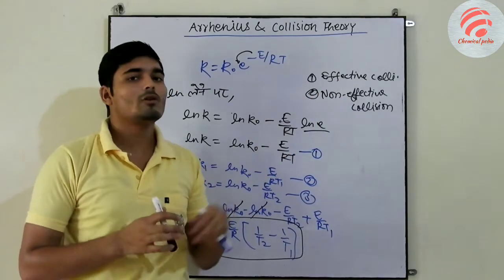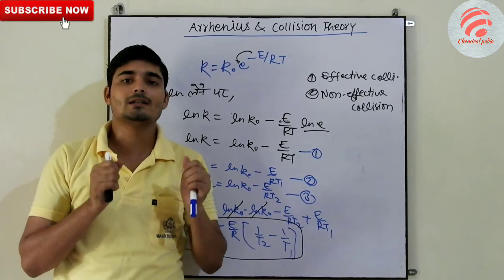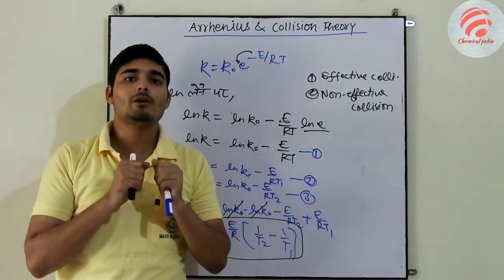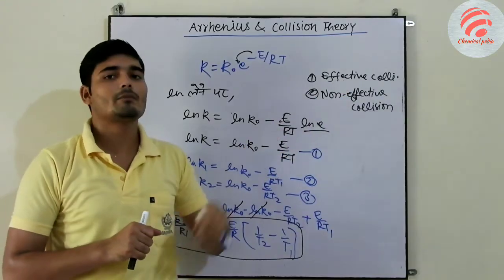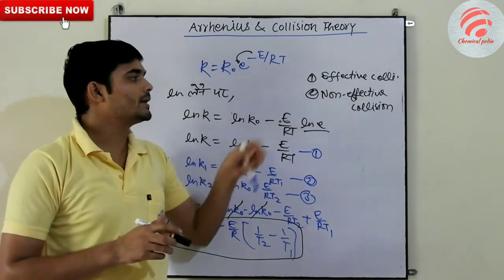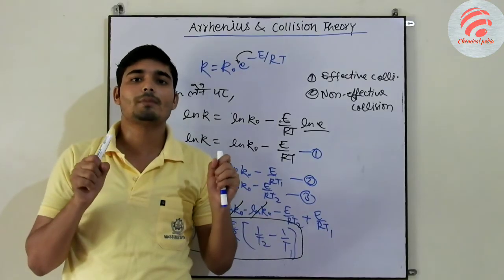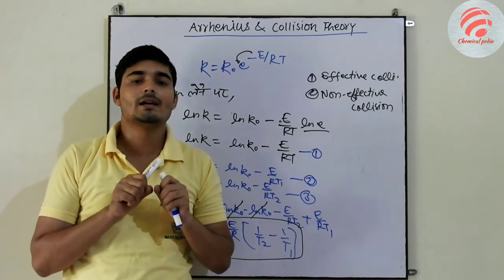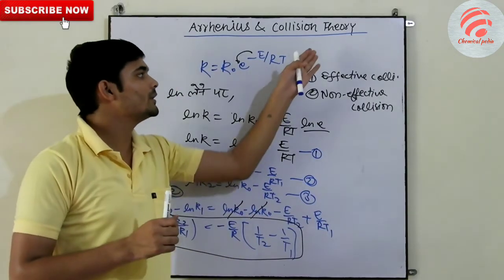Effective collision is the collision in which the reactant has the energy or minimum energy which can break the bond. That is our effective collision. The non-effective collision was that molecules or reactant have not so much energy, activation energy, which can break the bond.